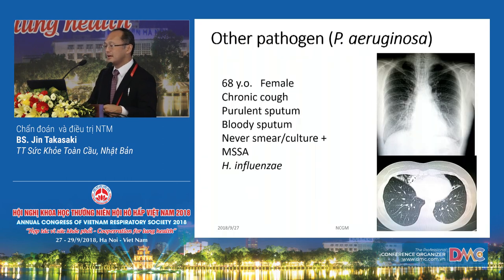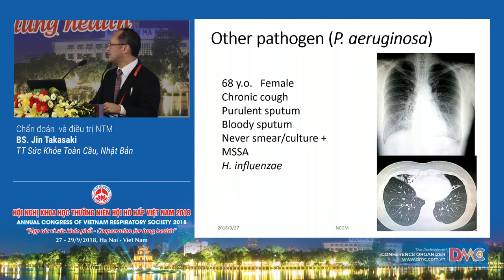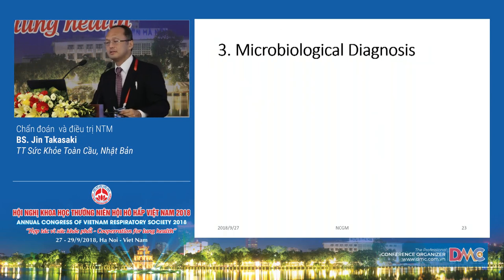Of course, when we see bronchiectasis there are many different pathogens. This patient with middle lobe and lingular involvement with bronchiectasis and volume loss had various Staphylococcus aureus, Haemophilus influenzae, and other bacterial infections — we never found MAC. This is not NTM.